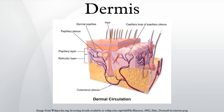These protein fibers give the dermis its properties of strength, extensibility, and elasticity. Within the reticular region are the roots of the hair, sebaceous glands, sweat glands, receptors, nails, and blood vessels.